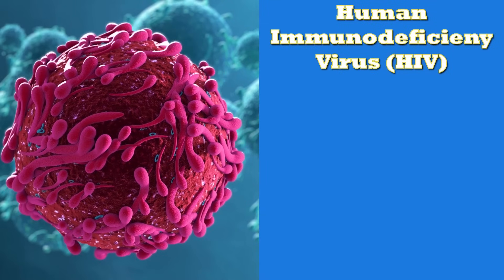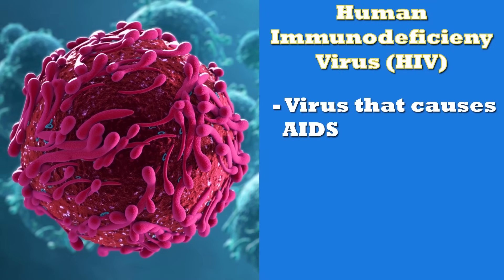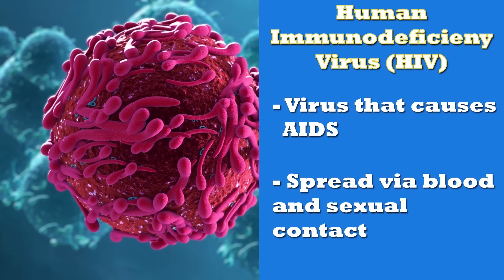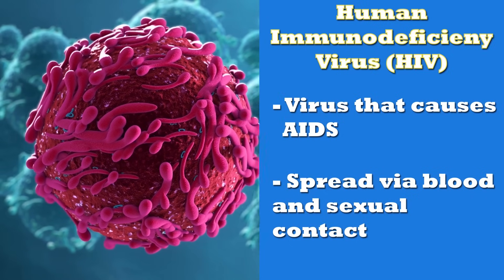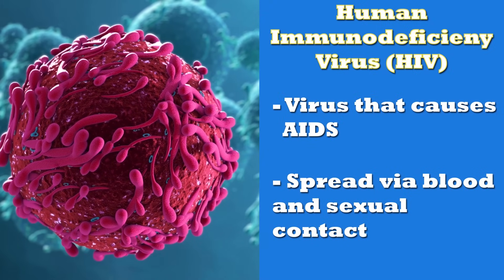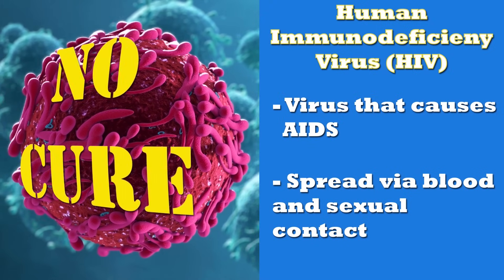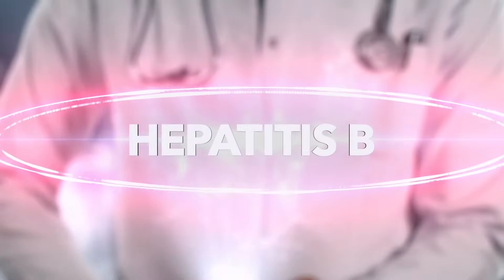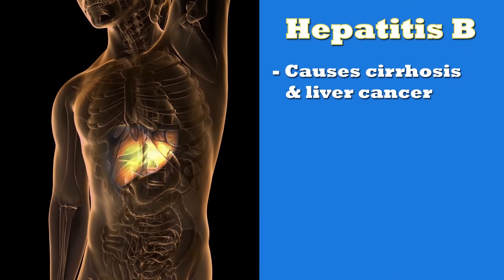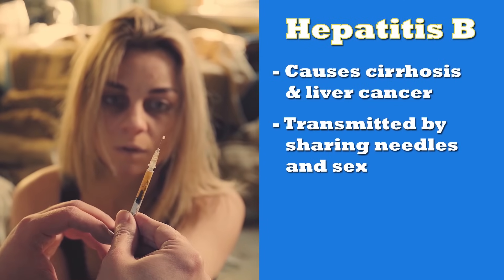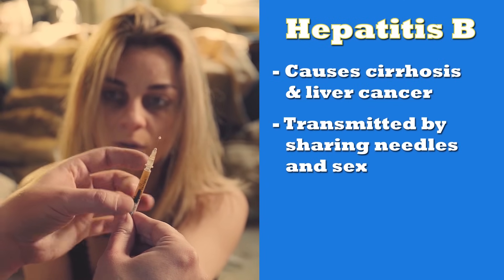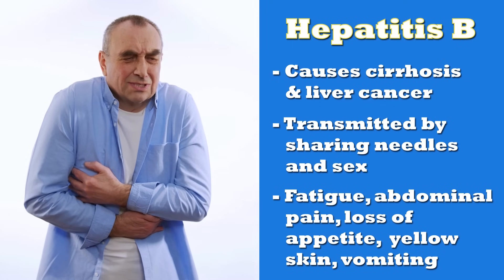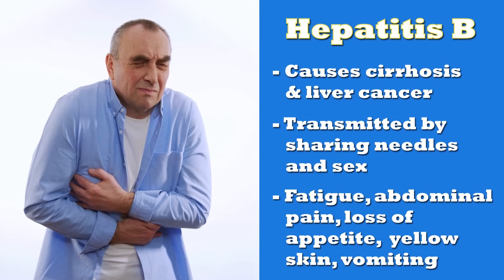The human immunodeficiency virus (HIV) is the virus that causes AIDS. It is spread through blood-to-blood and sexual contact. HIV weakens the immune system and makes a person highly susceptible to illness. There is no cure for AIDS. Hepatitis B is a virus that attacks the liver and can cause cirrhosis and liver cancer. It is mostly transmitted by sharing needles or having sex with an infected person. Symptoms include fatigue, abdominal pain, loss of appetite, yellowing of skin, and vomiting.